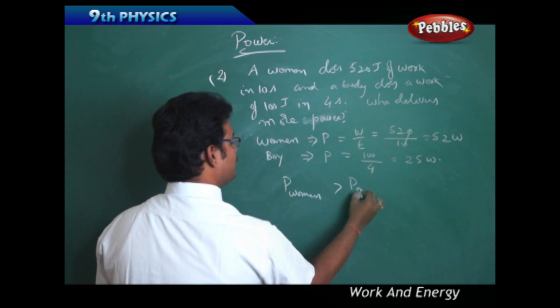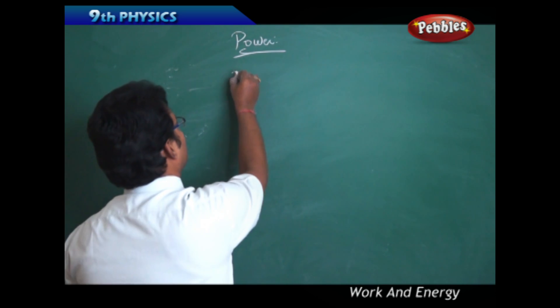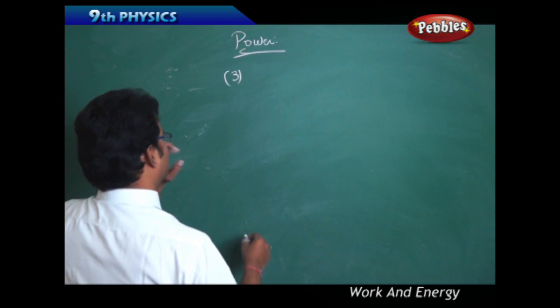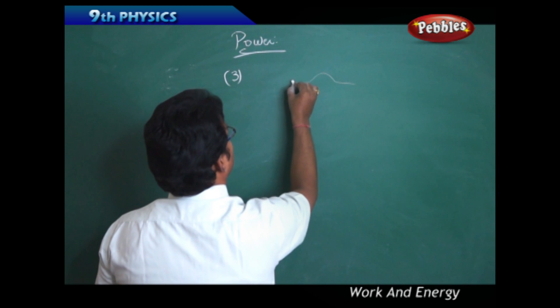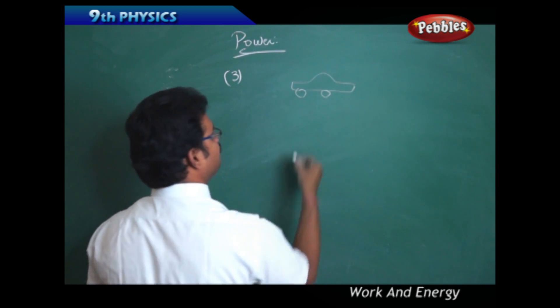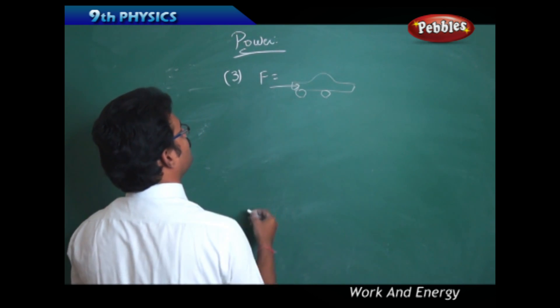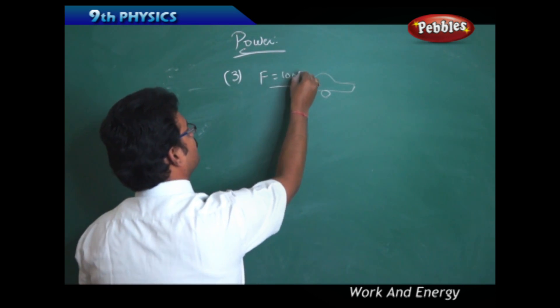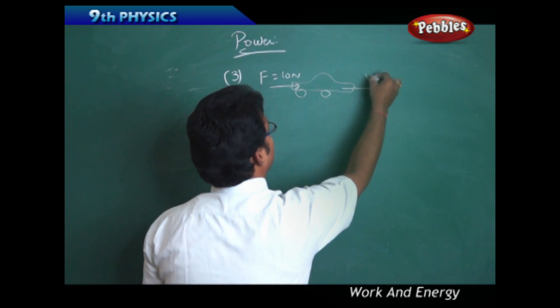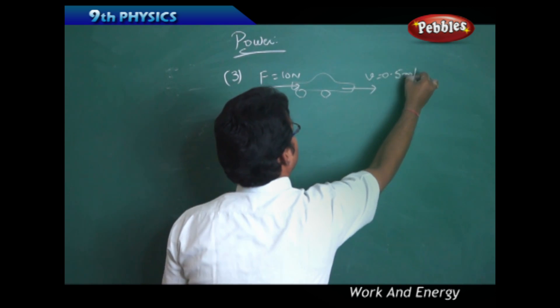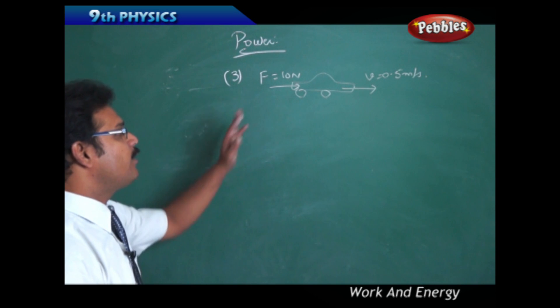Numerical problem 3: A force F = 10 newtons is applied on a toy car, and the car moves with a velocity of 0.5 meters per second. What is the power of the car?